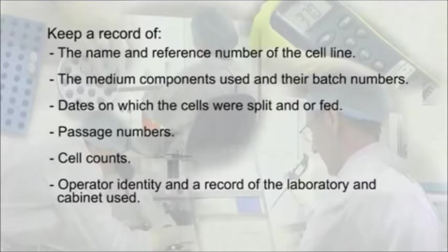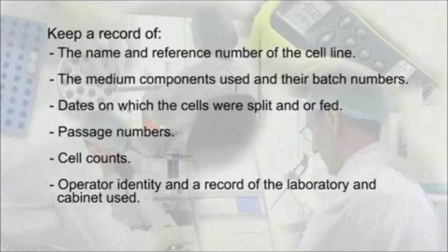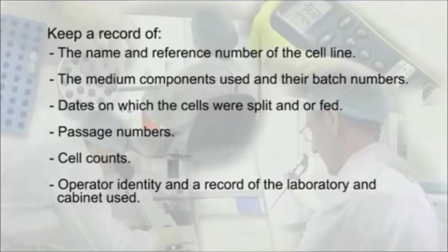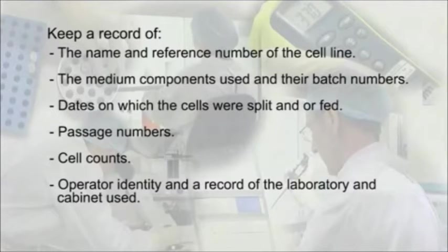Keep a record of the name and reference number of the cell line, the media components used and their batch numbers, dates on which the cells were split and/or fed, passage numbers, cell counts, operator identity, and a record of the laboratory and cabinet used.